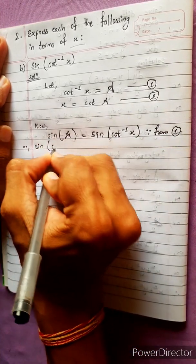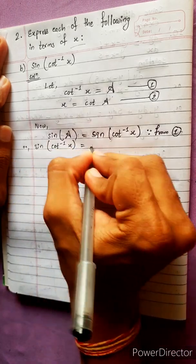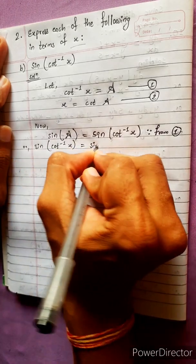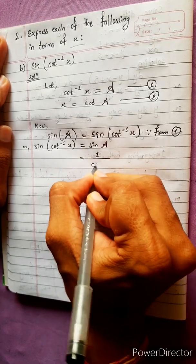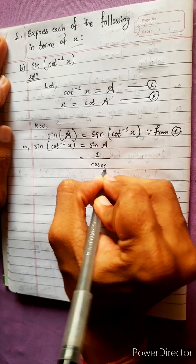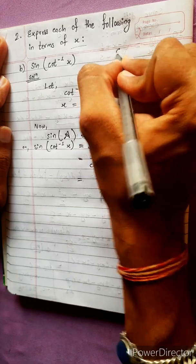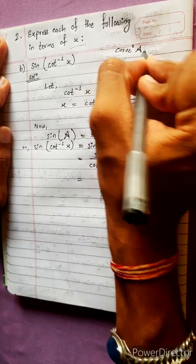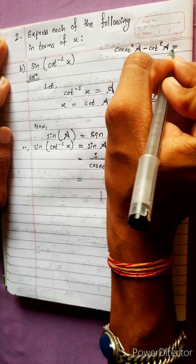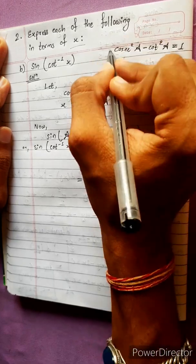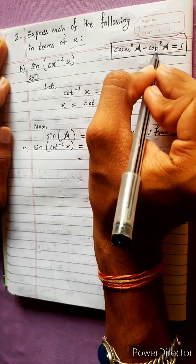So sin(cot inverse x) equals sin(a). Now using the trigonometric identity: cosec squared a minus cot squared a equals 1 — applying this formula, we get 1 divided by cosec a, which relates to cos squared a minus cot squared a equals 1.